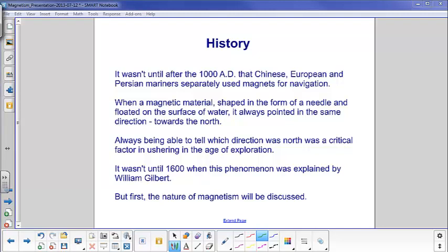Always being able to tell which direction was north was a critical factor in ushering in the Age of Exploration, because now if you know north, you also know south, which is the opposite. You know east and west, and you can find your way to different places, and you can find your way home. We had to wait until 1600 when William Gilbert first explained what was going on with magnetism. But first, we'll talk about some of the properties of magnetism.